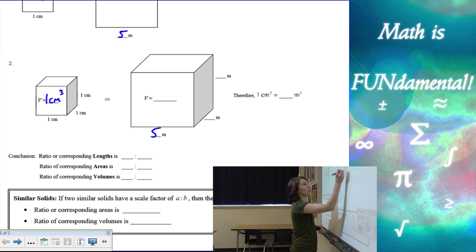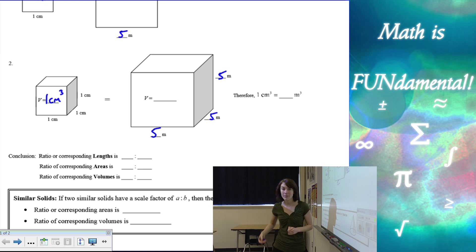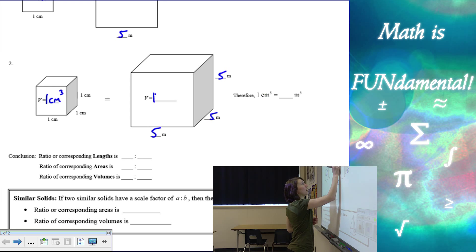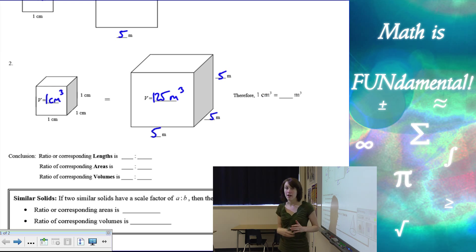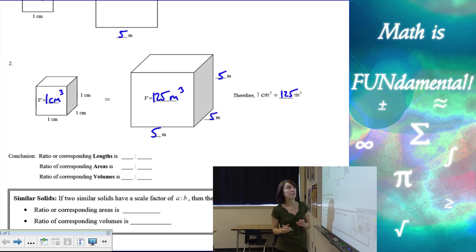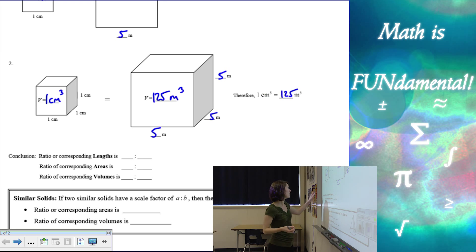Now if I use my scale factor and I have five meter side lengths, my volume is going to be 125 meters cubed — five times five times five. So the relationship between the volumes is one to 125.